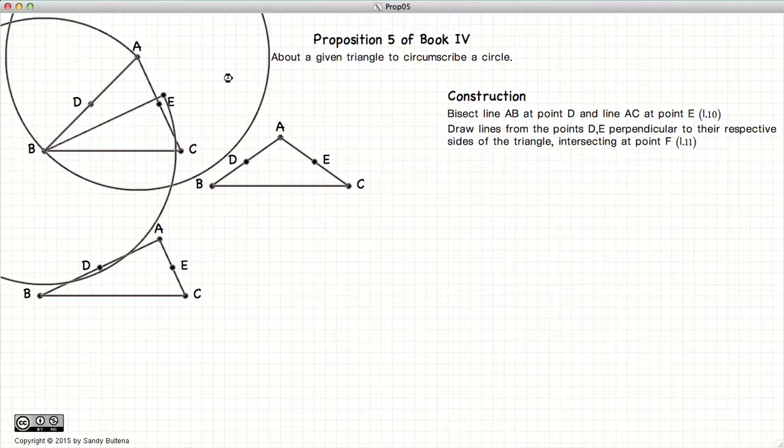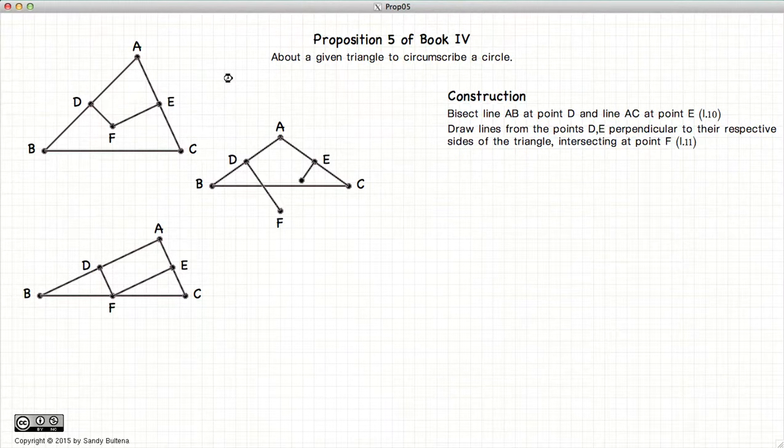Now what we are going to do is construct lines perpendicular to the lines AB toward the center of the triangle and from line AC toward the center of the triangle. Again you will notice we have three triangles to show three separate cases. One where these two lines intersect somewhere within the triangle, when it intersects on the base of the triangle, or in this case if these two lines intersect somewhere outside of the triangle.